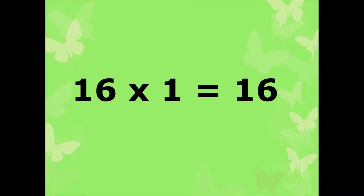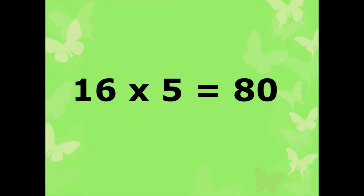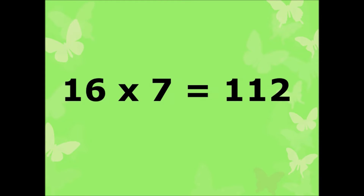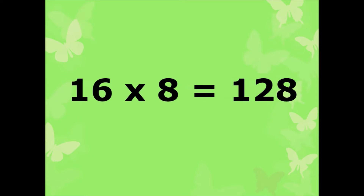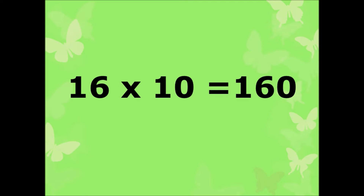16 ones are 16, 16 twos are 32, 16 threes are 48, 16 fours are 64, 16 fives are 80, 16 sixes are 96, 16 sevens are 112, 16 eights are 128, 16 nines are 144, 16 tens are 160.